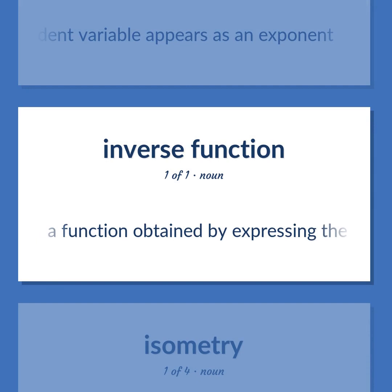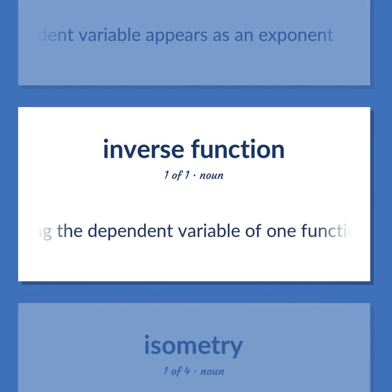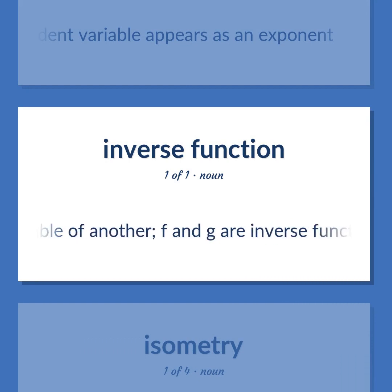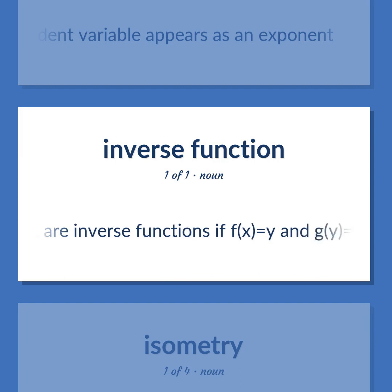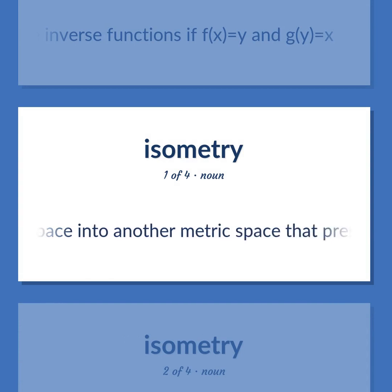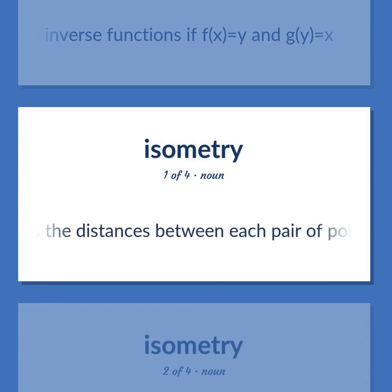Inverse function. A function obtained by expressing the dependent variable of one function as the independent variable of another. F and G are inverse functions if F(X) equals Y and G(Y) equals X. A one-to-one mapping of one metric space into another metric space that preserves the distances between each pair of points.